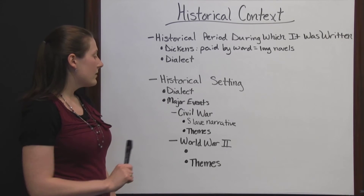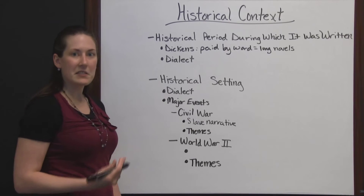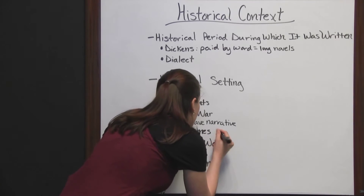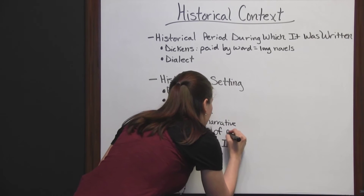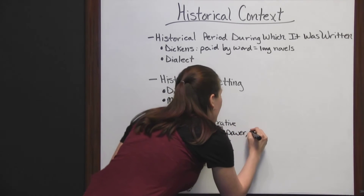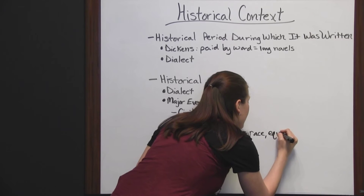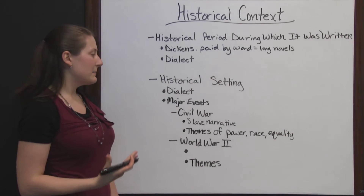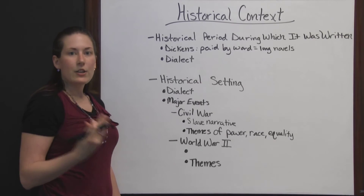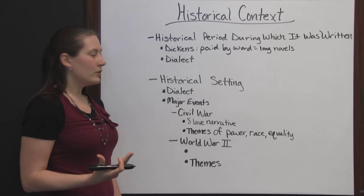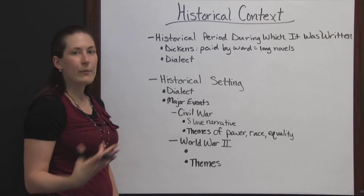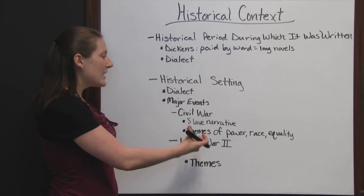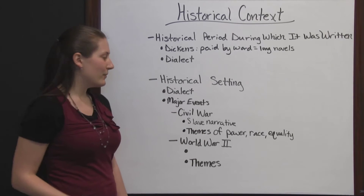Another thing to pay attention to with Civil War writings, slave narratives, and anything from that time period are the themes. A lot of times you'll see themes of power, race, and inequality. When slavery ended, it was because people were saying your skin color doesn't make you more or less of a person — everyone's equal. While equal rights didn't come about until later, it started that theme of equality around the Civil War time.